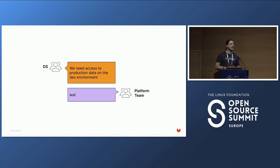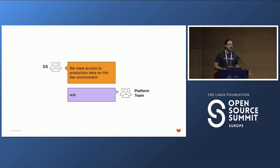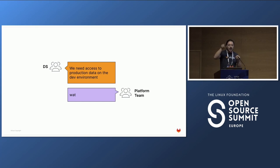Finally, this is like a rite of passage for every data scientist trying to deal with a platform team: we need production data in the development environment. Why? Because models depend on data, and if you have only development or test data, you cannot build or test models. You need production data. And every time we say this to a platform team, you can see the bewilderment — why am I in this conversation?